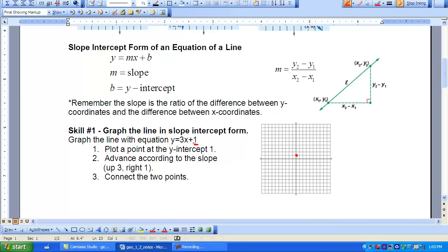Then we want to advance according to the slope. So we have a vertical movement of 3 and a horizontal movement of 1. So 1, 2, 3, 1. And then we'll do it one more time. 1, 2, 3, 1.